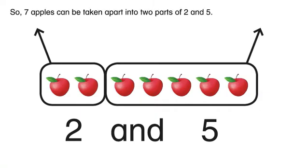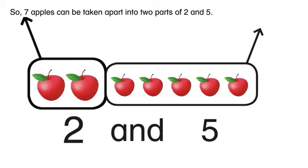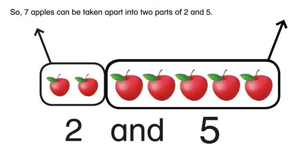So, seven apples can be taken apart into two parts of two and five.